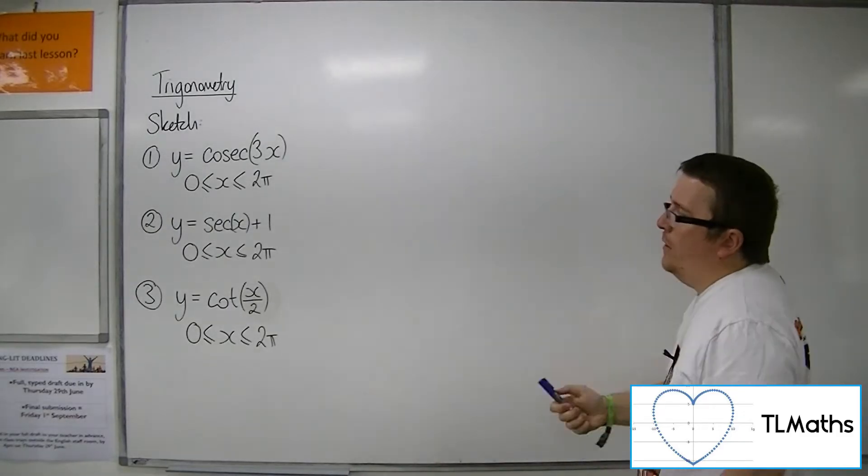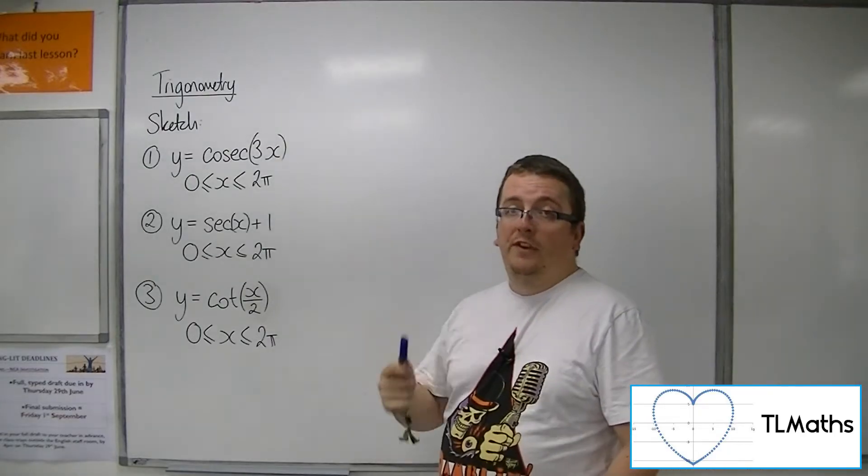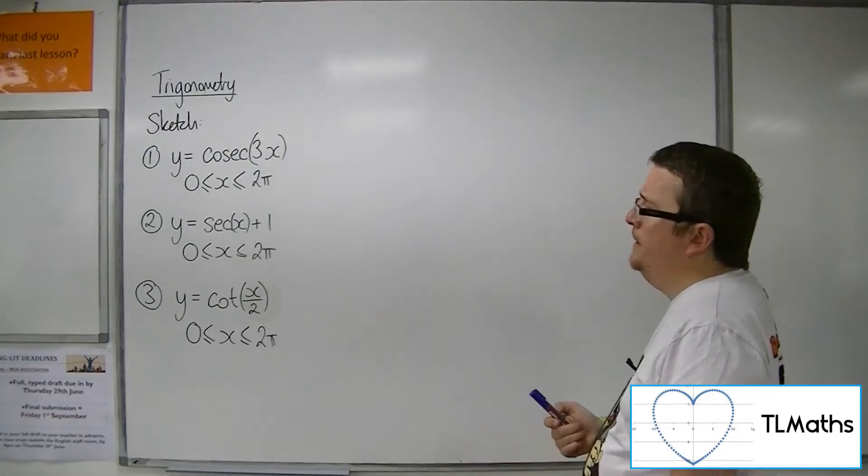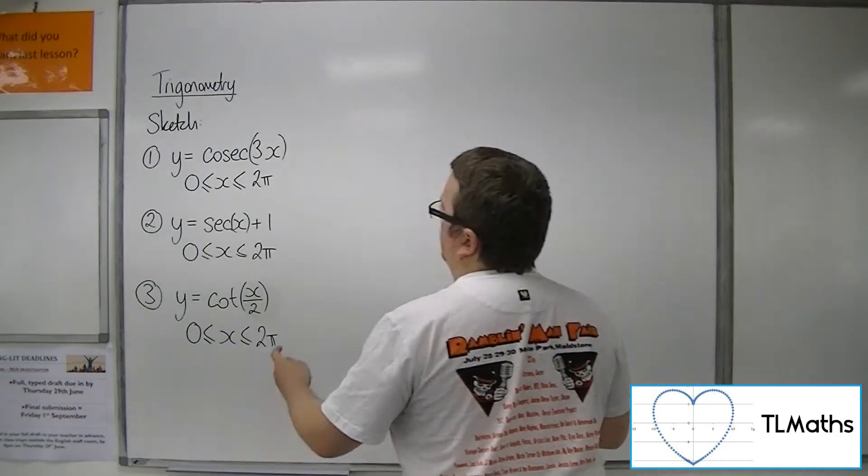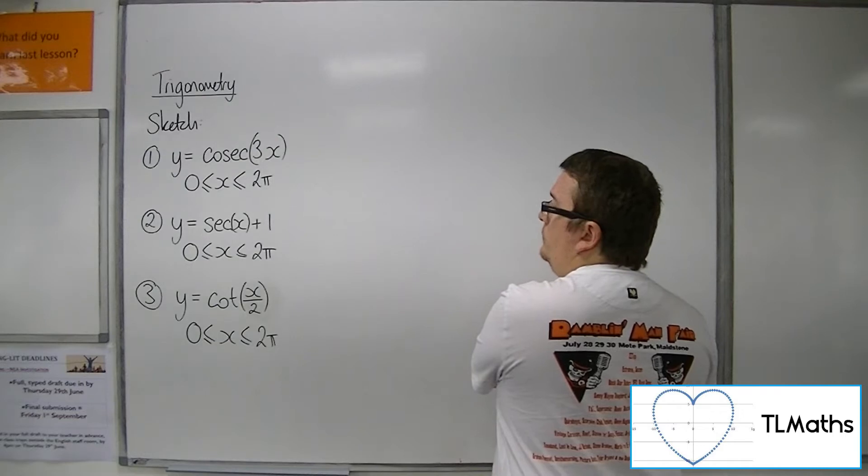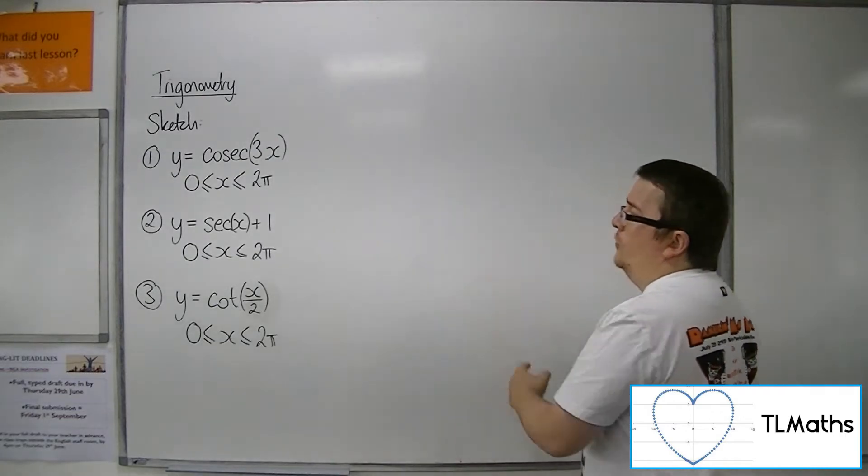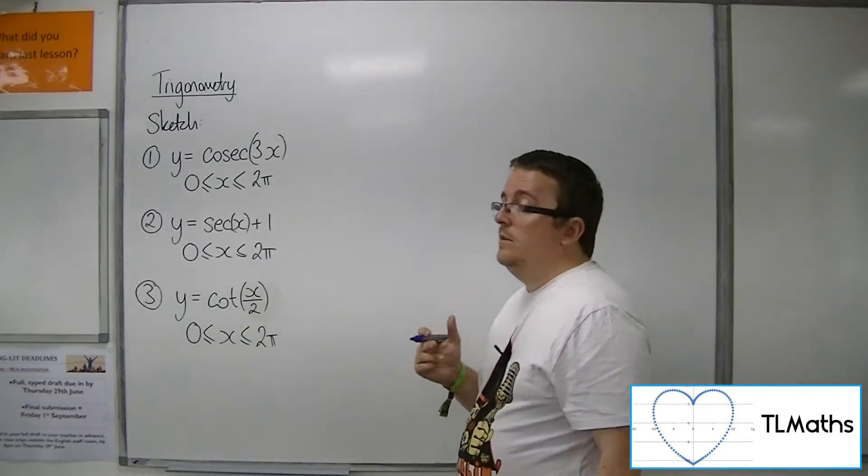and we're going to sketch it between 0 and 2 pi. So that's a stretch parallel to the x-axis factor 1 third. The cosec curve usually has a period of 2 pi, but now it's going to repeat 3 times within that.